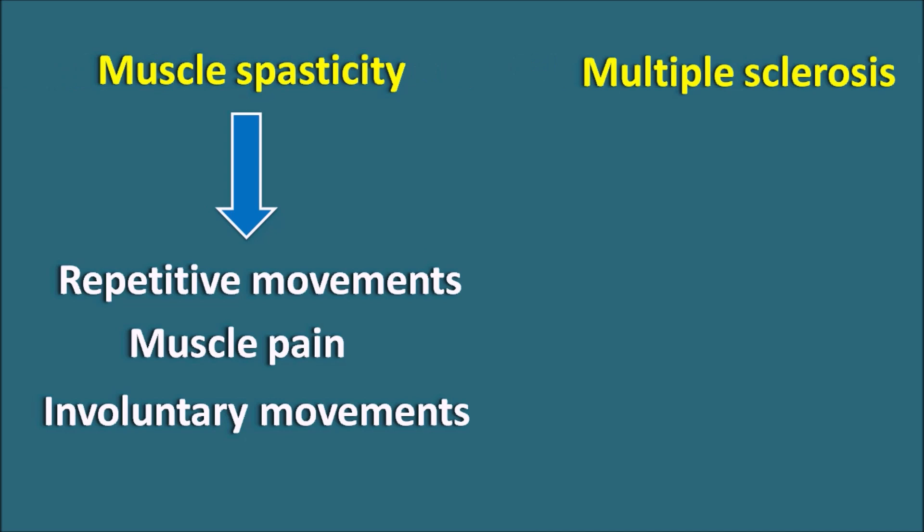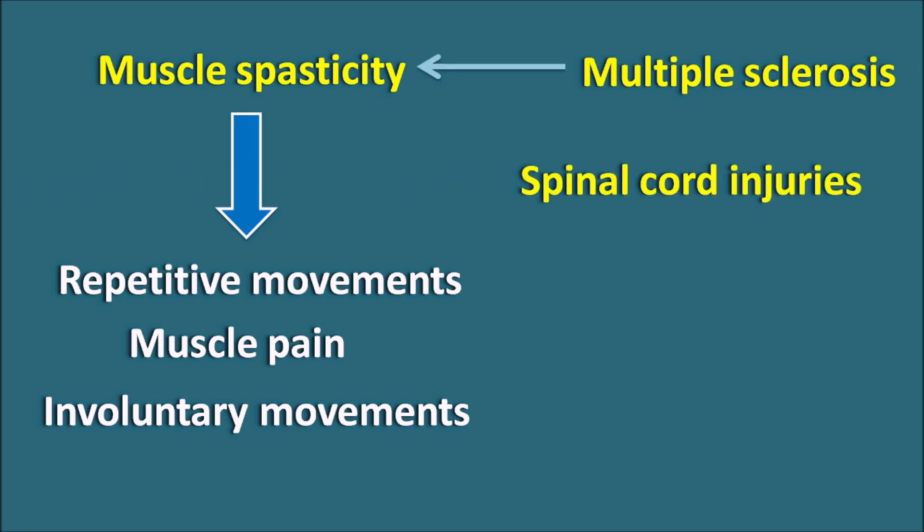Multiple sclerosis is a neurodegenerative disorder which mainly affects the skeletal muscle, resulting in muscle spasticity. Muscle spasticity can also be observed with spinal cord injuries. These spastic conditions are associated with increased muscle pain and muscle spasm. In such conditions we can use centrally acting muscle relaxants. We can also use peripherally acting muscle relaxants like dantrolene, or neuromuscular blockers directly blocking nicotinic receptors like succinylcholine and pancuronium.